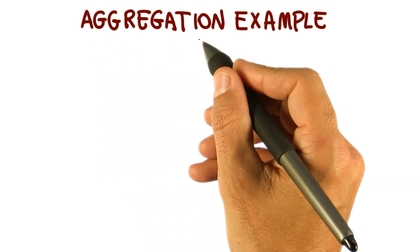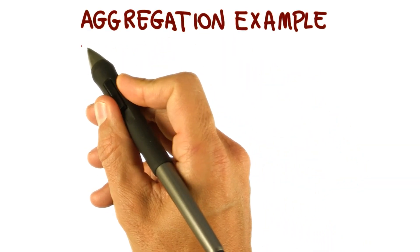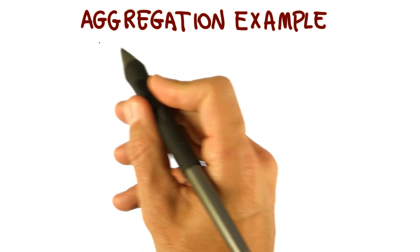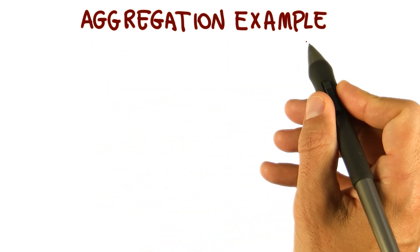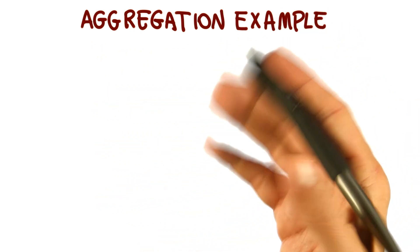As we saw when we introduced relationships, there is a different kind of association, kind of a specialized one, which we call aggregation. So here we're going to look at an example of an aggregation. So first of all, what is an aggregation?